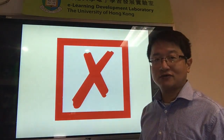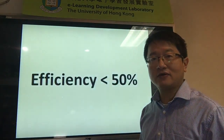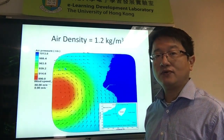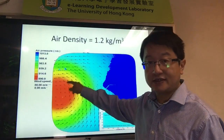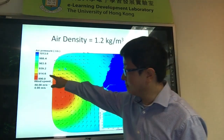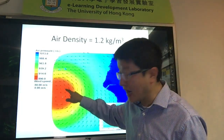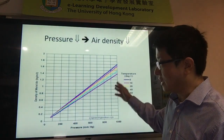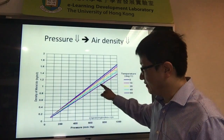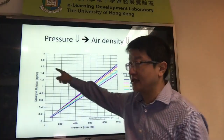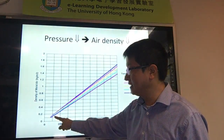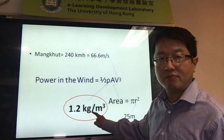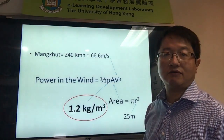But this is also not exactly correct, because the efficiency is usually less than 50%. Also, when the wind speed increases, the pressure at the high-speed wind will also drop. This chart shows the relationship between pressure and density — the lower the density, the lower the pressure, or vice versa.